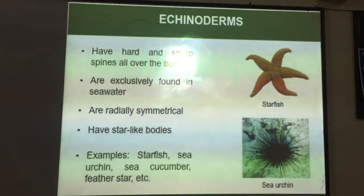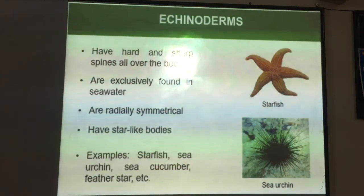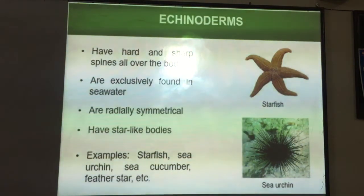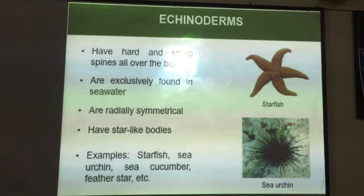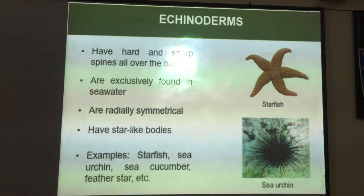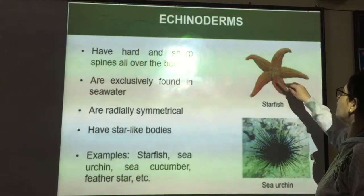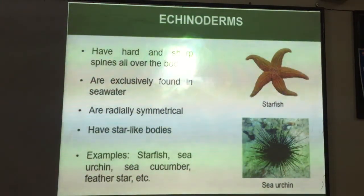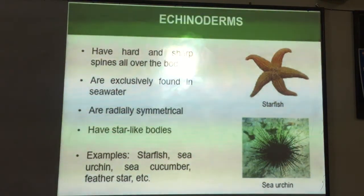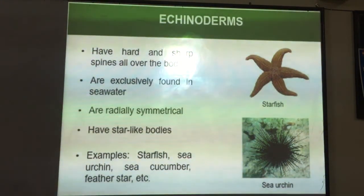Then we have echinoderms. They have hard and sharp spines all over their body and are exclusively found in sea water. They have radial symmetry, meaning their body can be divided into two halves from any plane. They usually have star-like bodies. Examples are starfish, sea urchin, sea cucumber, and feather star.